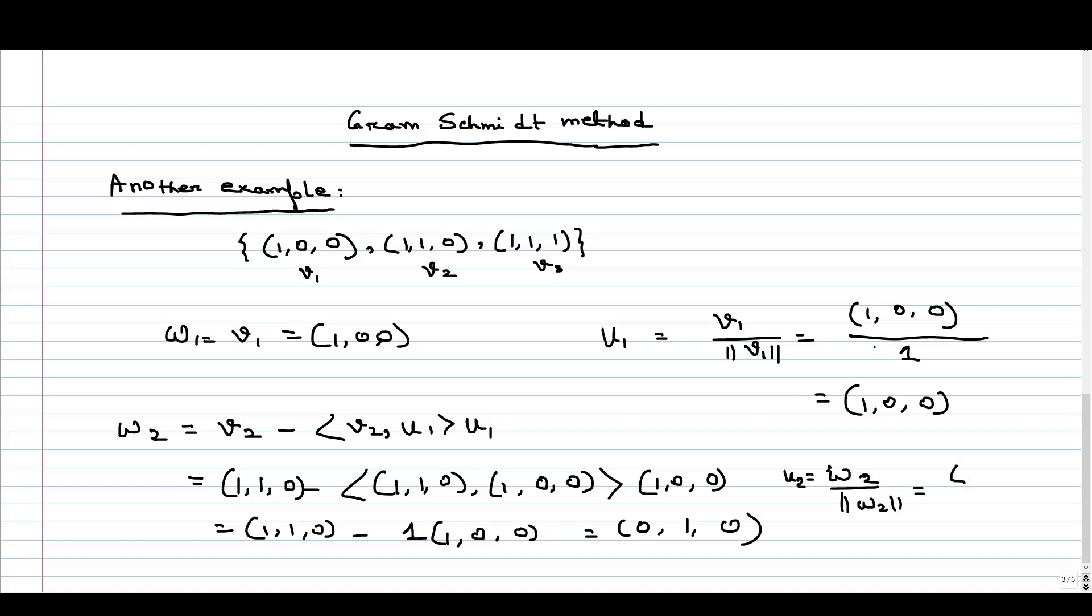So it is (0, 1, 0) and norm is 1 here. So our new second vector is nothing but (0, 1, 0). You can check that U1 and U2 are orthogonal to each other, and both U1 and U2 are orthonormal also because their norm is 1.